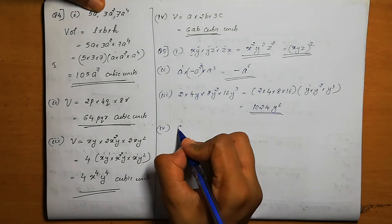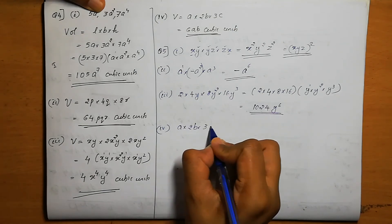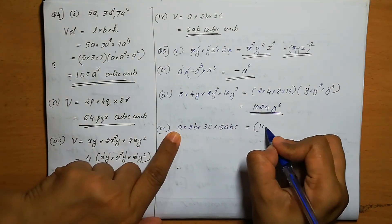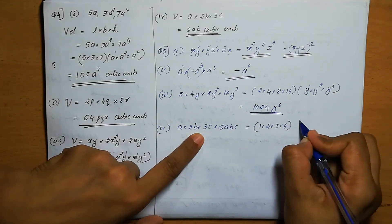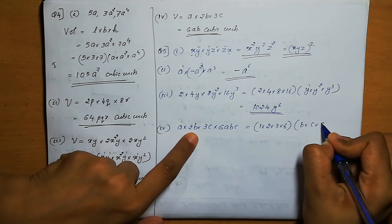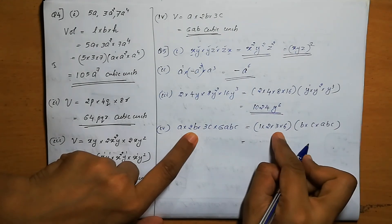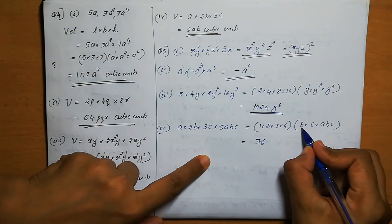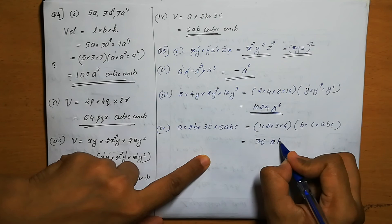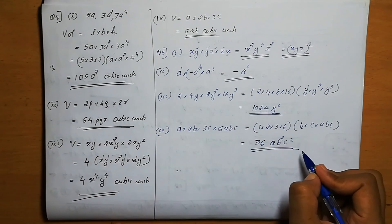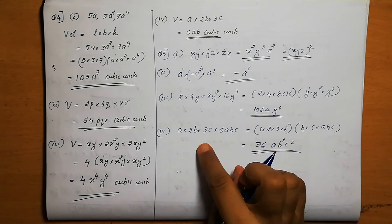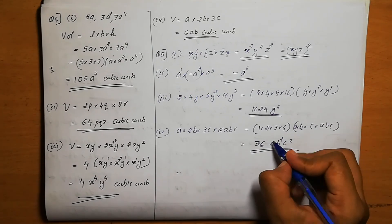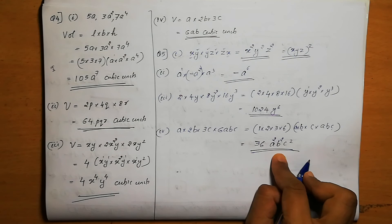Fourth one: a into 2b into 3c into 6abc. Numbers: 1 into 2 into 3 into 6 — 2 into 3 is 6, 6 into 6 is 36. Variables: a into a is a square, b into b is b square, c into c is c square. So the answer is 36a square b square c square.